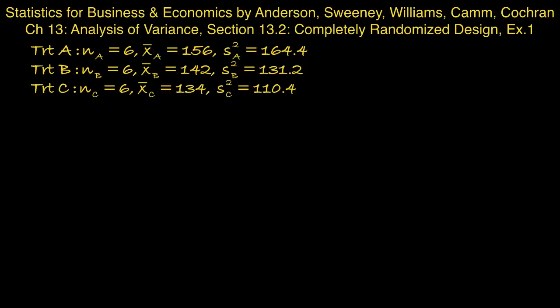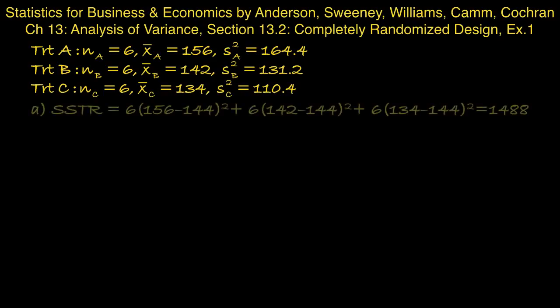Part A, compute the sum of squares between treatments. We need the overall sample mean for this and that comes to 144. And then we use the formula provided in the textbook to calculate the sum of squares between treatments as 1488.